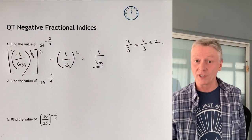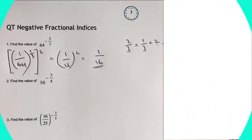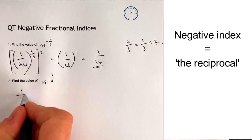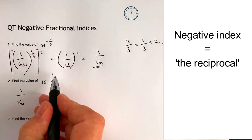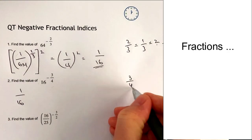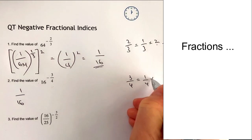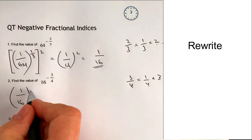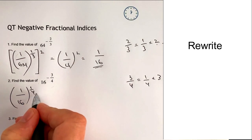So let's have a look at question number 2. It's a negative index, so it's going to be 1 over 16. 3 quarters is exactly the same as saying 1 quarter multiplied by 3, so therefore I can write this as to the power of 1 quarter, which is the same as the fourth root, and then I'm going to cube everything once I've completed it.